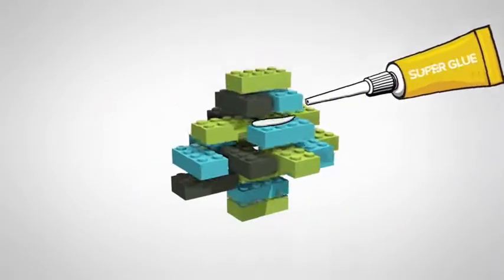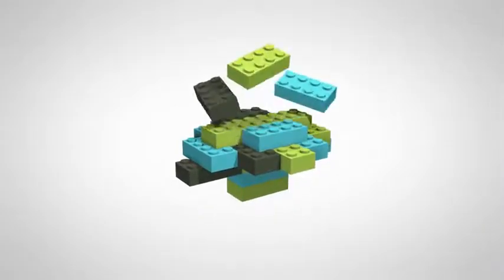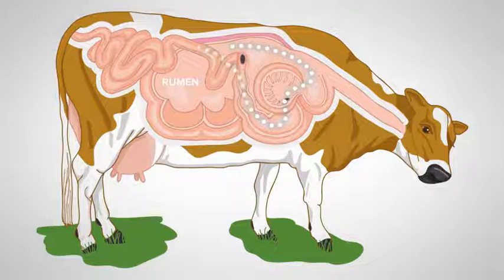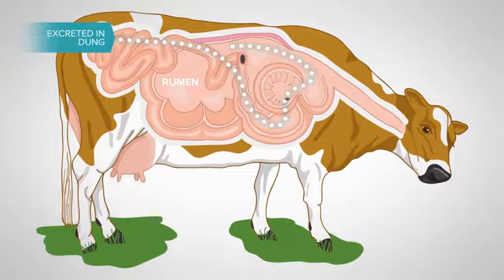This is like sticking the Lego blocks together with superglue. If the lignin content is high, then some of the structural carbohydrates pass through the rumen undigested and are excreted in the dung.